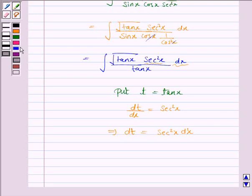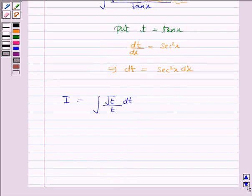So substituting all these values in the integral, the integral becomes under the root t dt upon t, which is again equal to t to the power minus 1 by 2 dt.